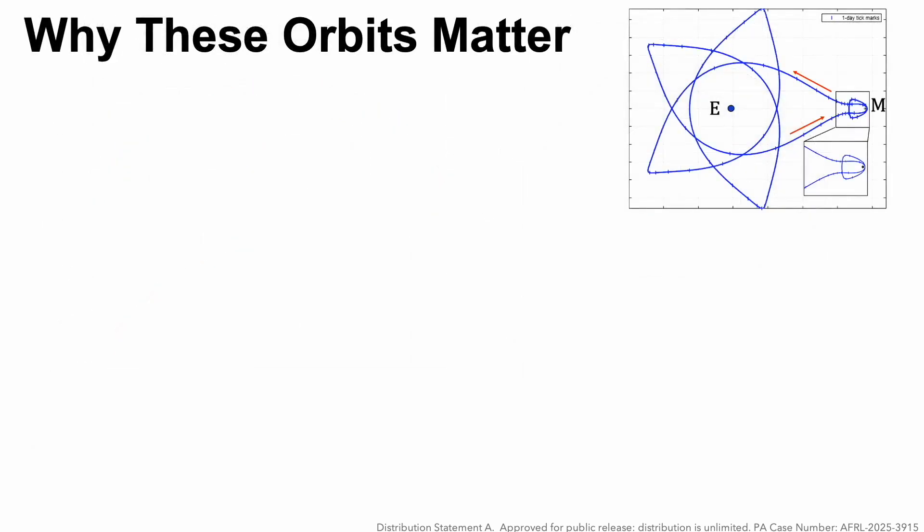So why do these orbits matter? First of all, think beyond just the Earth-Moon system. This is a new class of trajectories. I do not think it was previously known that you could have a trajectory that stably orbits alternately between each of the two masses in a three-body system. They are ballistic, meaning not using any fuel, so that will lead to fuel efficiency.